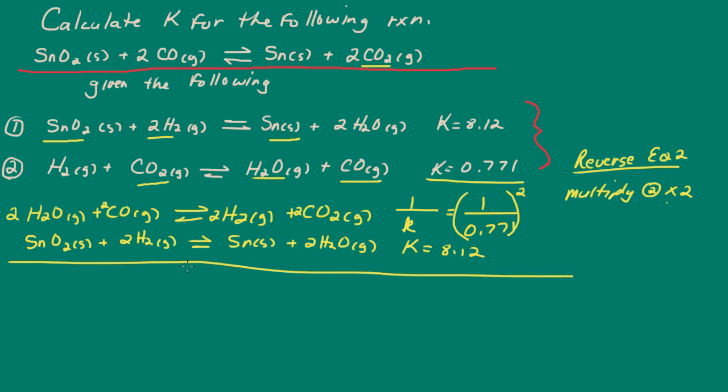So let's go ahead and add these. And what I have, my water will cancel out. My 2 hydrogens will cancel out. And I'm left with 2 carbon monoxide plus my tin 4 oxide and solid tin plus 2 carbon dioxide gas.